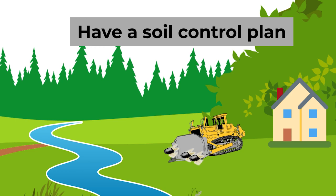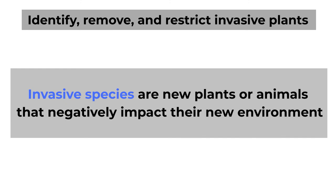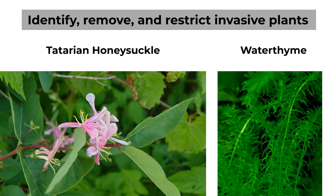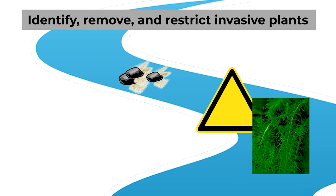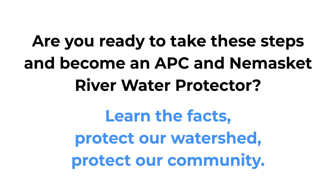Avoid planting invasive or foreign plants. Plants such as Tartarian honeysuckle and water chestnut are invasive, fast-growing species. When they fill out the space of a river, the river velocity can sharply decrease, leading to yet more sedimentation. Try to identify invasive species in your area with applications like PlantSnap and ensure they never take root. Are you ready to take these steps and become a protector of the APC and Namaskat River watersheds? Learn the facts. Protect our watershed. Protect our community.